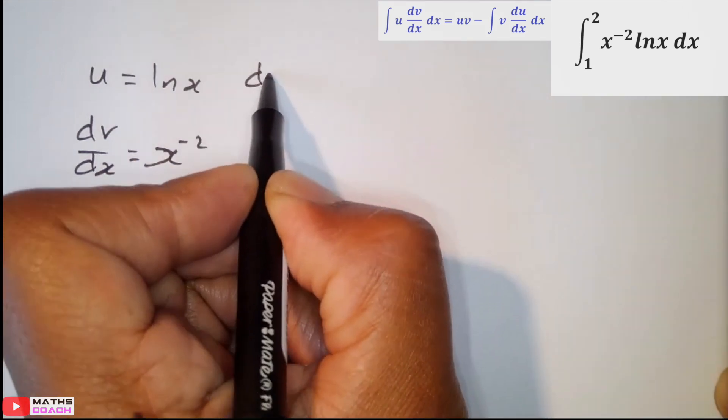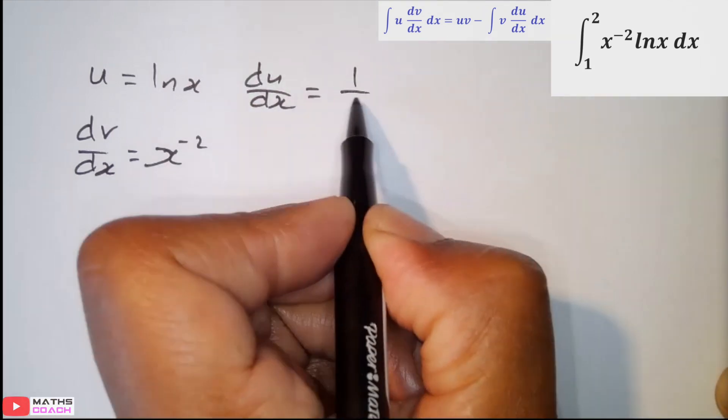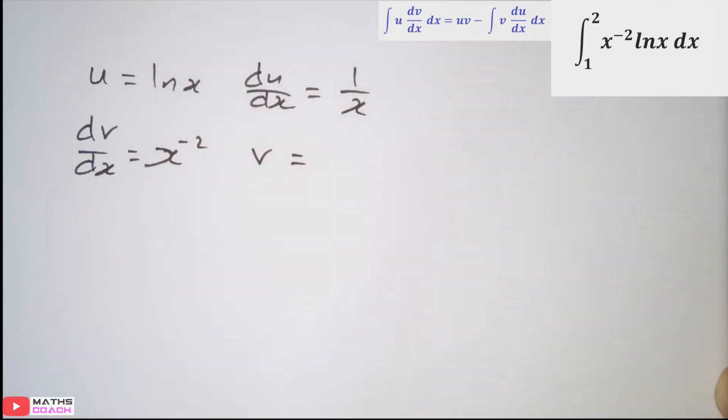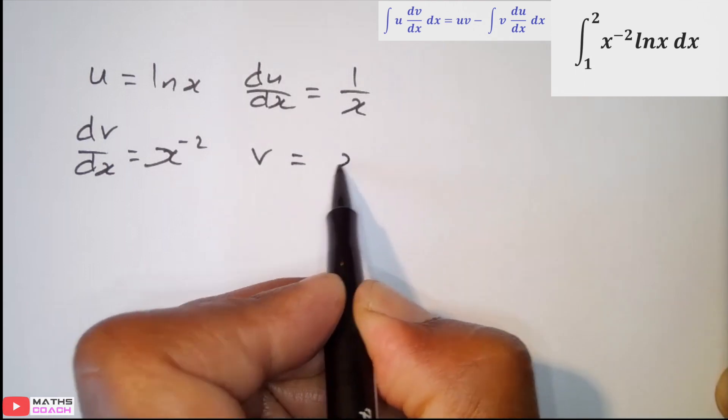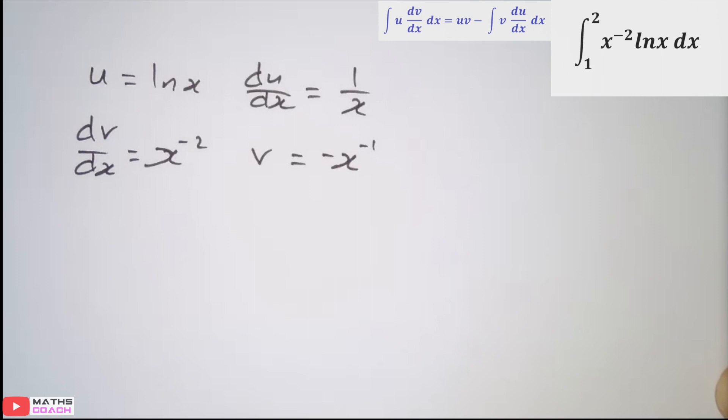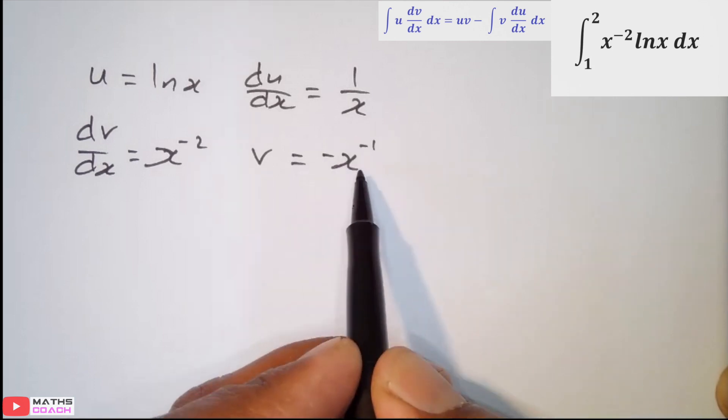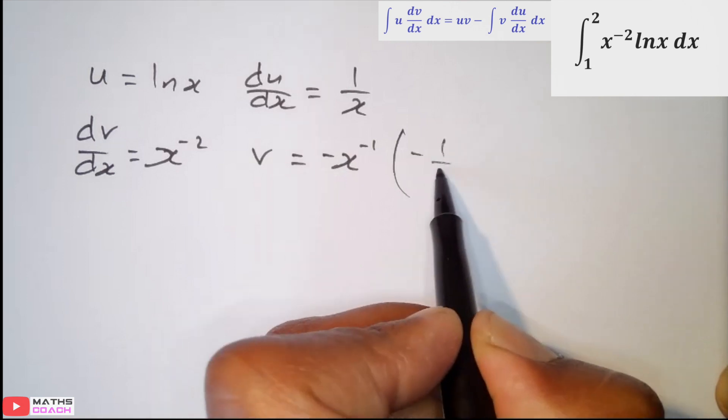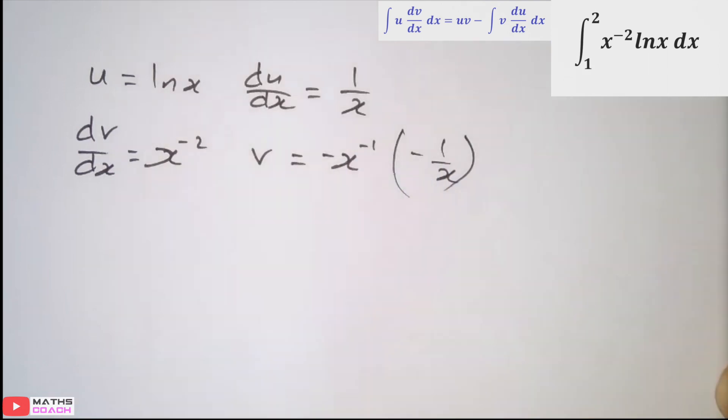We then differentiate to get du/dx, in other words, 1 over x. And in this case, to get v, we need to integrate x to power minus 2. And that would automatically become x to power minus 1 with a minus sitting outside. Just before we start to substitute into our parts formula, just look at v. The way v looks, minus x to power minus 1, it may be easier to write that as negative 1 over x. By writing it as a reciprocal, it makes it so much easier when we multiply.